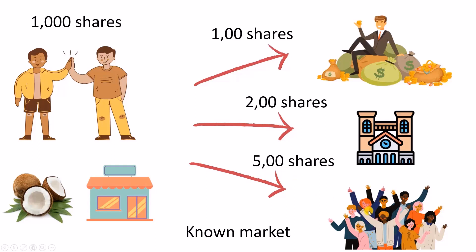So when an IPO is undersubscribed, everyone gets their shares. When it is oversubscribed, then it is a lottery system, and everyone may not get shares.